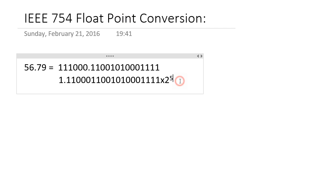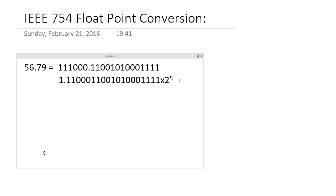So this is the number we get from this decimal number. Now to convert it into the IEEE 754 standard binary number, we have a format: one digit for the sign, then eight digits for the exponent, then 23 digits for the floating point mantissa.